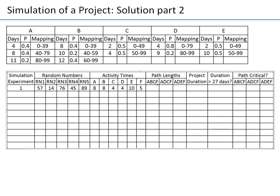Now computing path lengths: A→B→C→F = 8+8+4+5 = 25 days. A→D→C→F = 8+4+4+5 = 21 days. A→D→E→F = 8+4+10+5 = 27 days. So A→D→E→F is critical with project duration of 27 days. We did not exceed 27 days, so we record zero for the exceedance indicator.